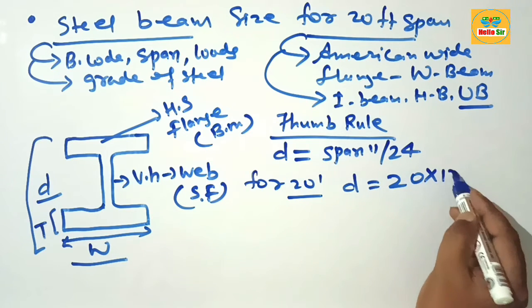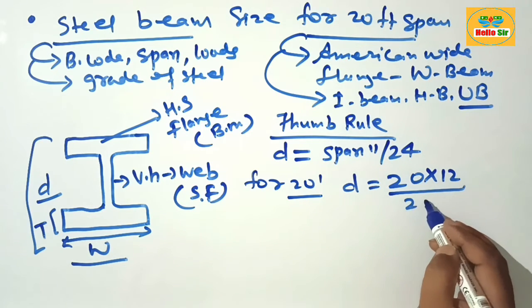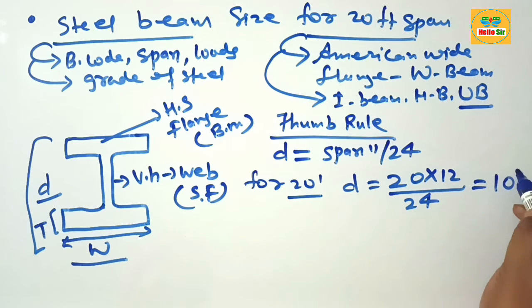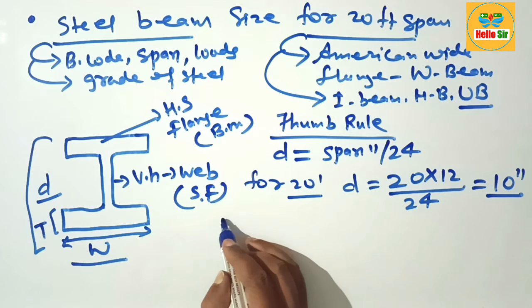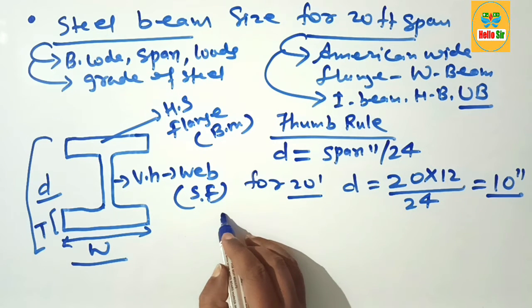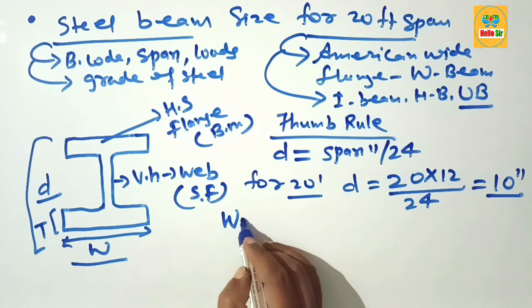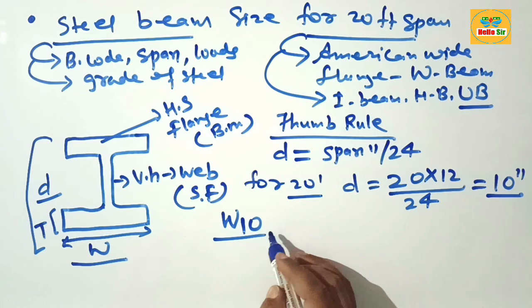This means you need an American wide flange W10 beam, or a universal beam like UB 250x125, or an ISMB 250 beam. 250 is the depth.